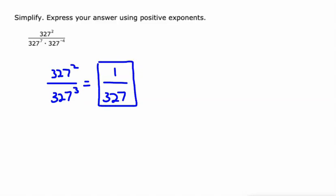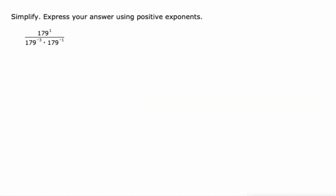Similar idea right here, but maybe just slightly different. Again, I'm gonna leave that 179 to the first power alone on top. On the bottom, I'm gonna multiply—they're both base 179—so I can add the exponents: negative 3 plus negative 1 is negative 4. Then at this point, I'm doing 1 minus negative 4. 1 minus negative 4 is like 1 plus 4, which is 5. So 179 to the fifth power.